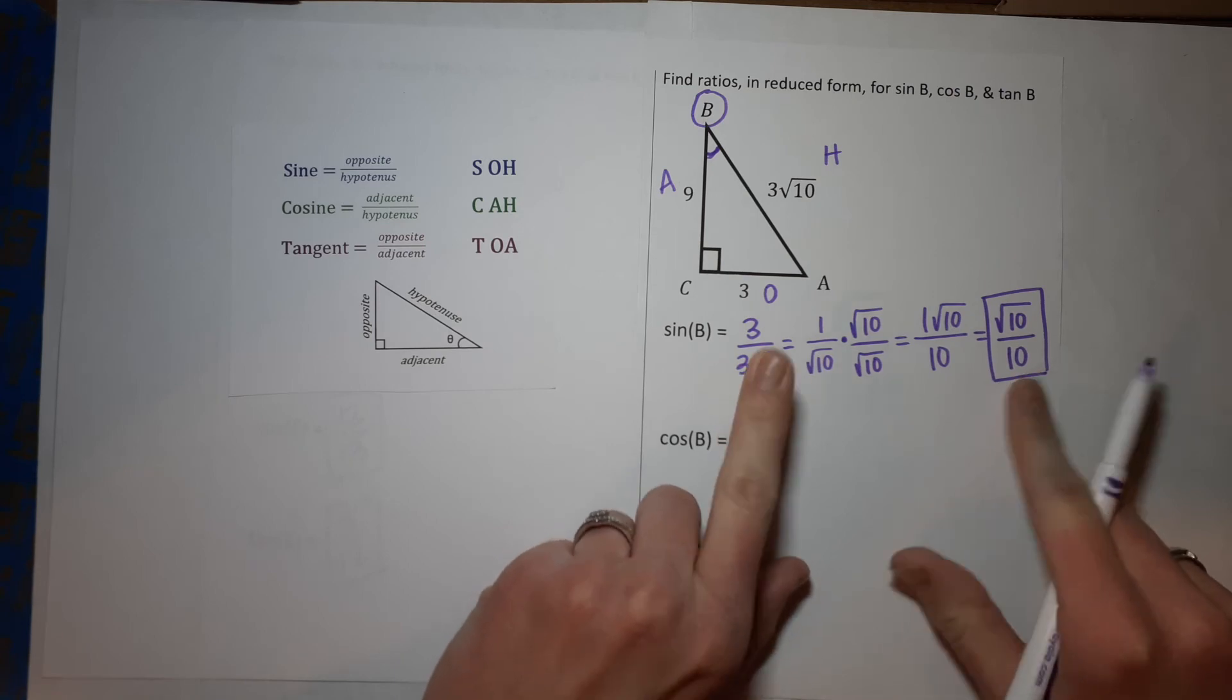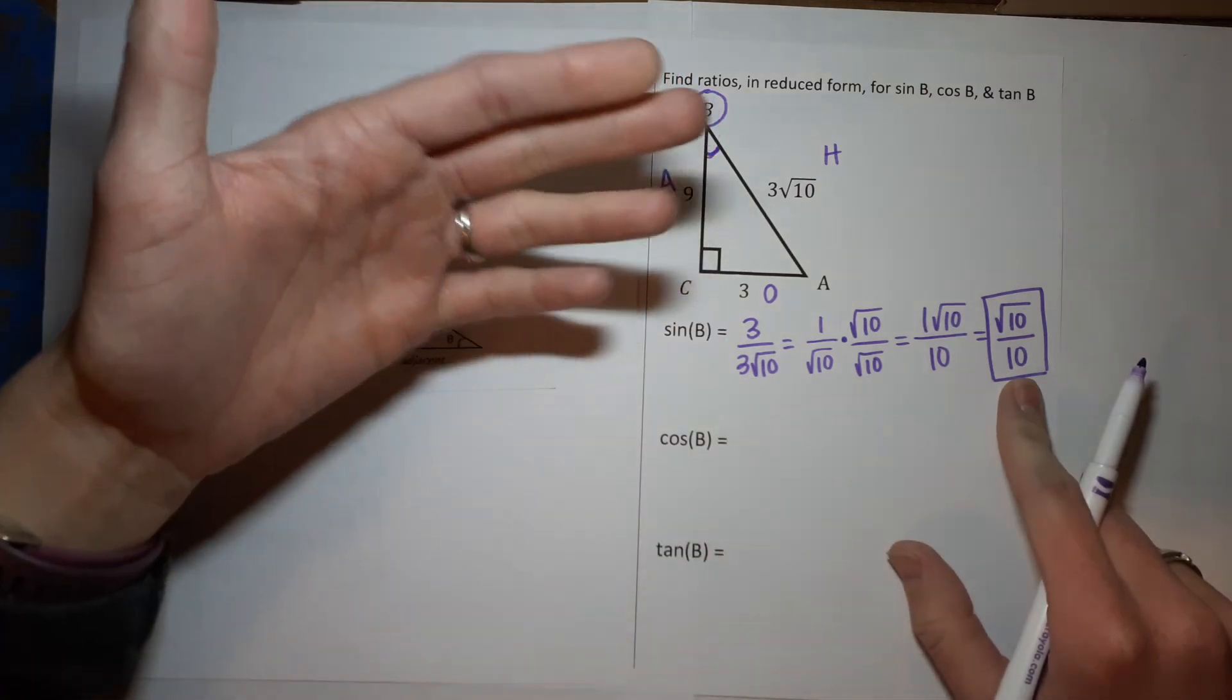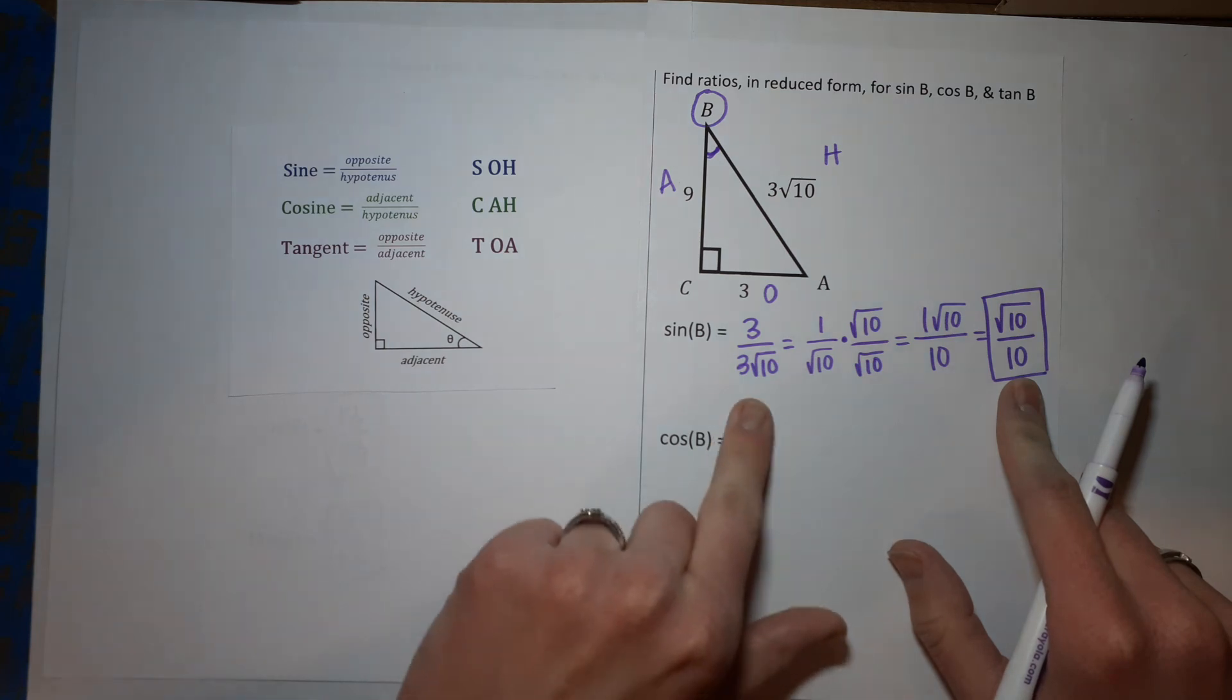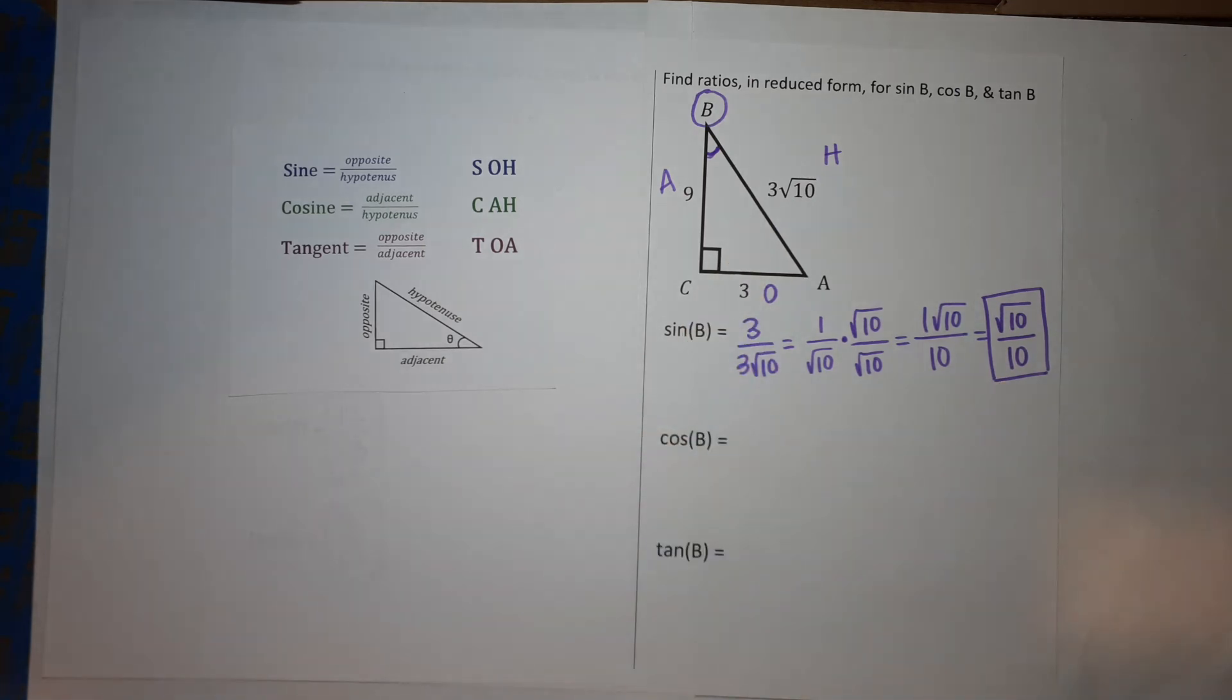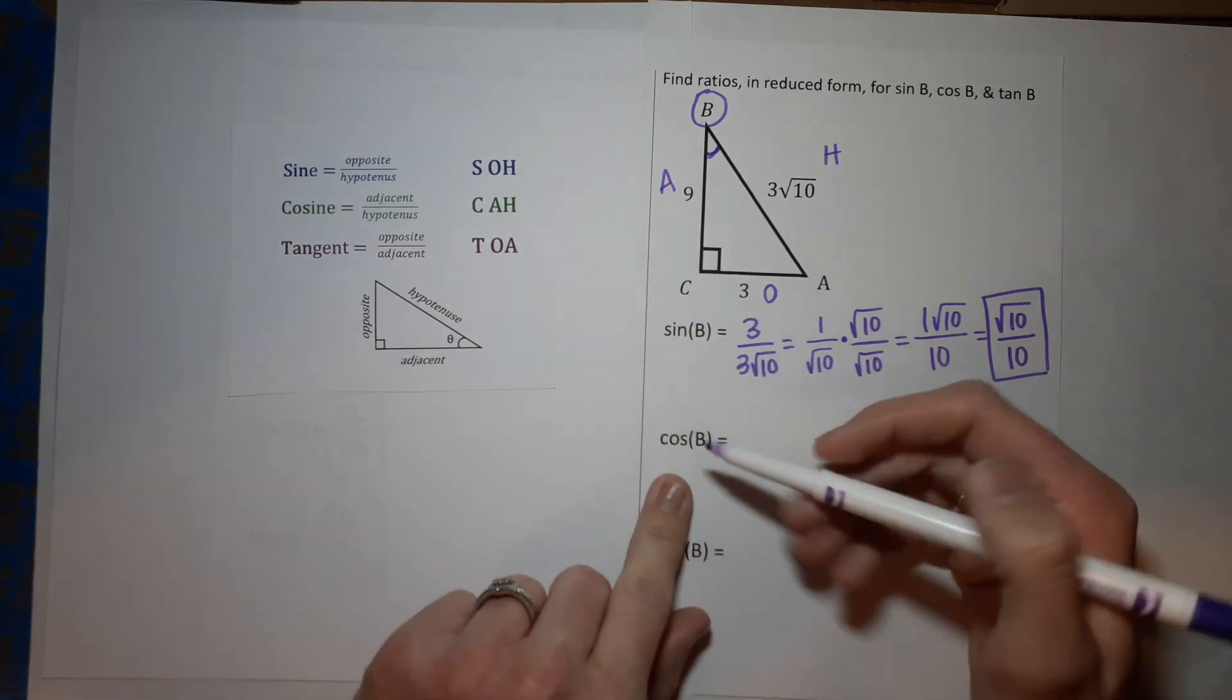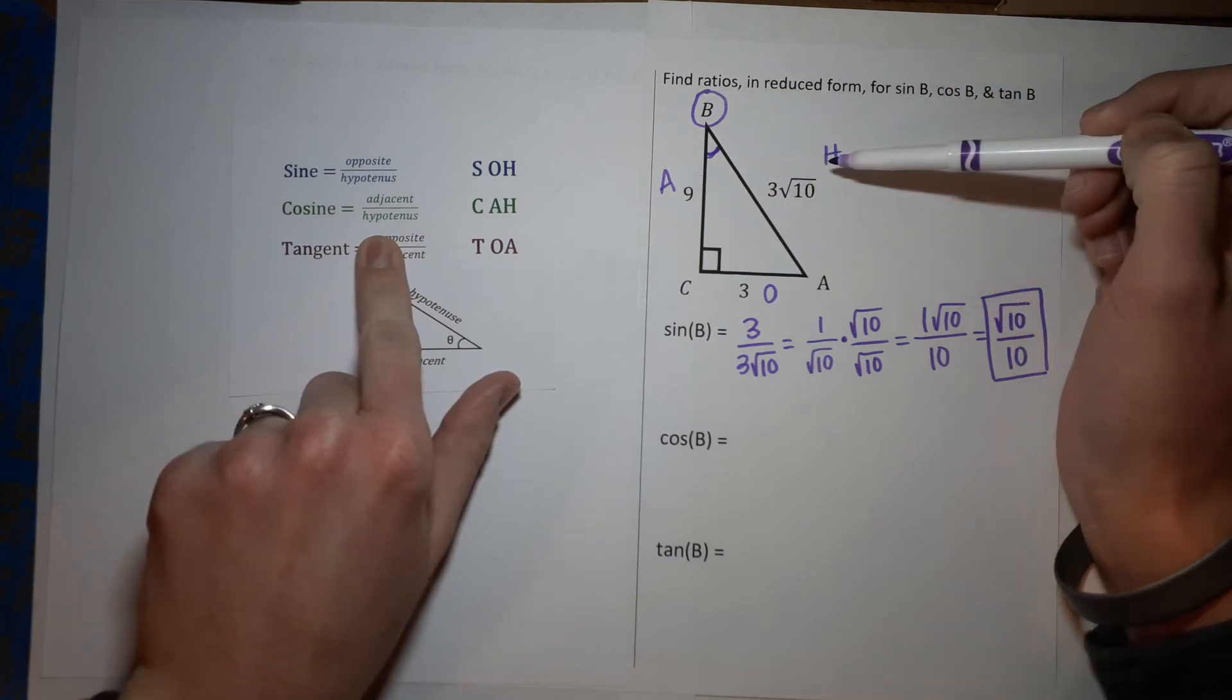You might be like 'how did I get from here to here?' Well, guess what? If you want to try it, stick both of these in your calculator and you will get the same ugly decimal. So we changed what it looked like, but the answer is the same. And we got that radical out of our denominator, so now we like it.